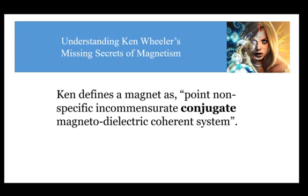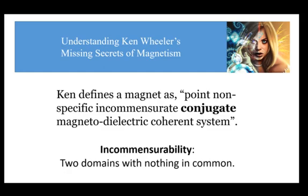In my previous video, we talked about the principle of incommensurability and what that means. Put simply, two domains are incommensurate if both domains have nothing in common — what one is, the other one isn't. For example, zero is not one, and one is not zero. The domain of zero is nothing like the domain of one, and the domain of counterspace is nothing like the domain of space and vice versa.